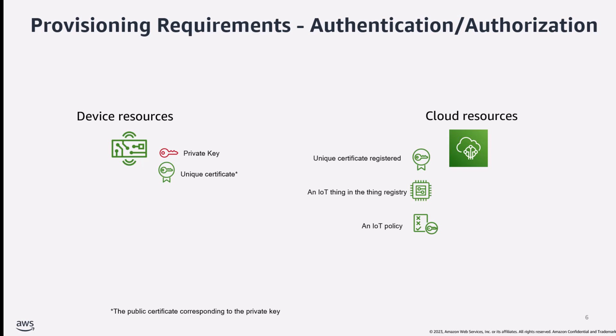On the cloud side, any onboarded device has its own representation in AWS IoT called a thing — as in Internet of Things. This thing is saved in a thing registry internal to AWS IoT Core. A copy of the device certificate is also saved in AWS IoT Core and bound to the corresponding thing. Finally, a policy document is attached to that thing as well, describing the device's permissions in the AWS cloud — your MQTT publish, subscribe, connect, etc. This is the final state we are trying to reach after onboarding is successful.